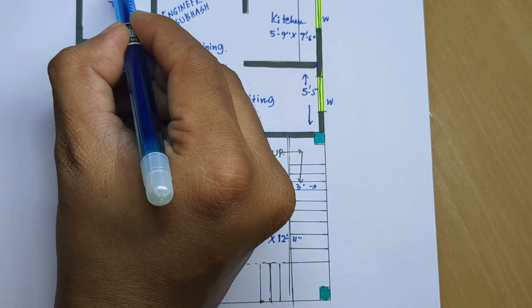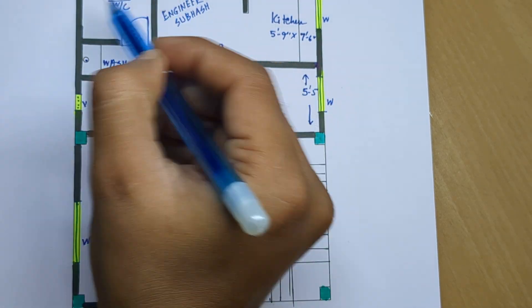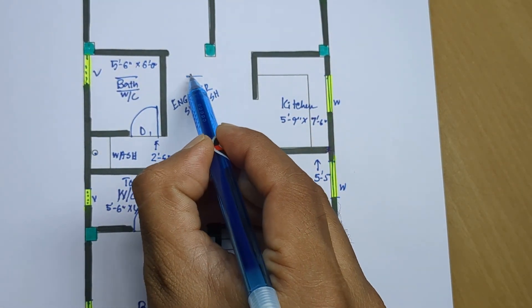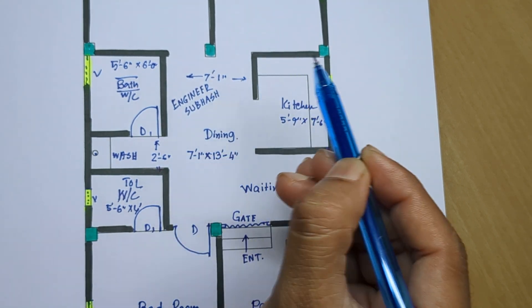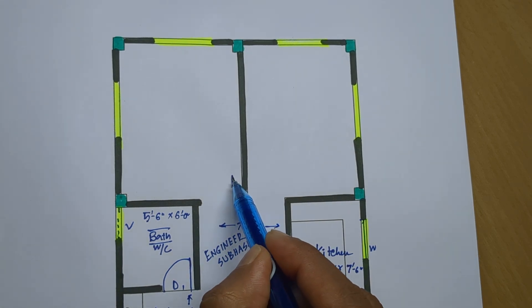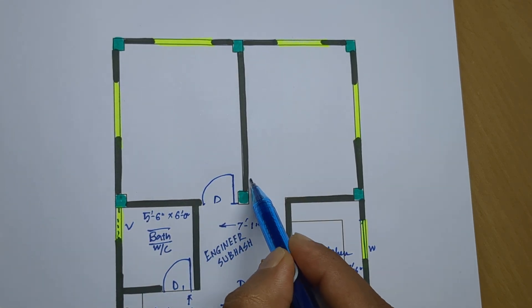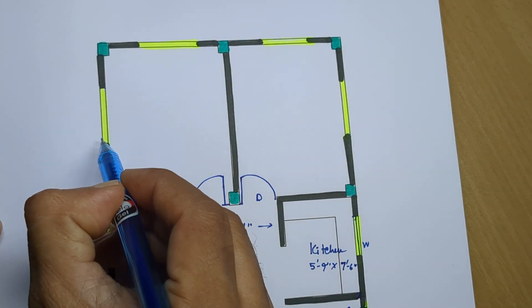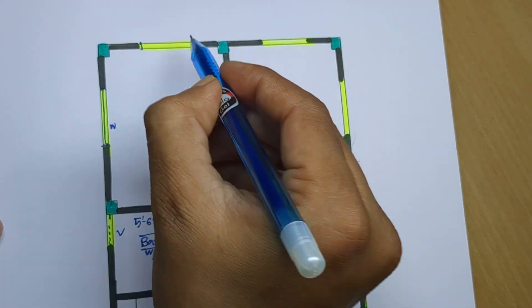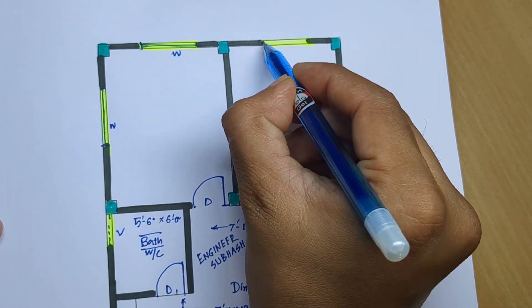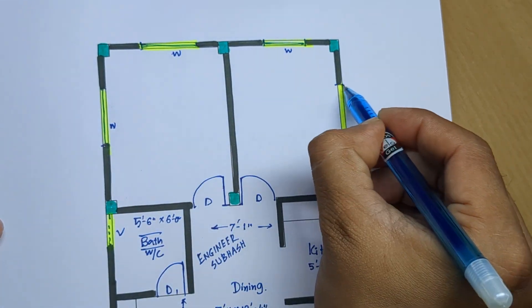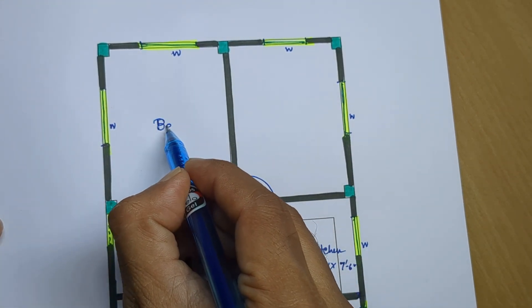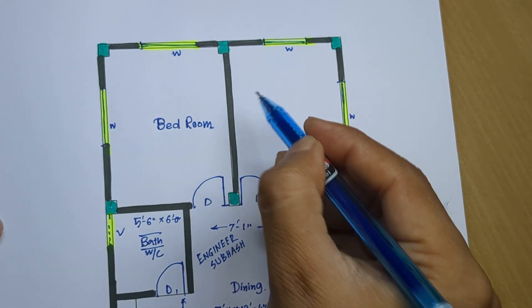And 5 feet 6 inch by 6 feet 0 inch bath and latin OK. 7ft 1 inch us ke baad door and bedroom, window, bedroom.